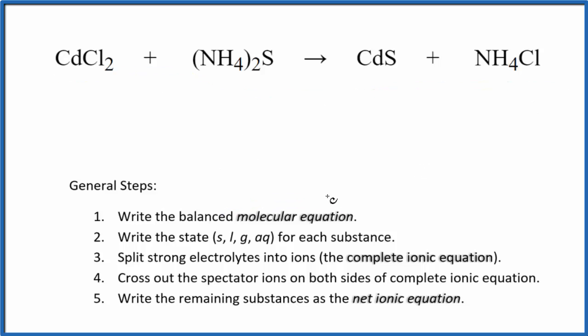So to do that, I can see I have two chlorine atoms here, just one here. Let's put a two in front of the ammonium chloride. Now I have two chlorides, two ammonium ions, but I have two ammonium ions here. And it looks like everything else is balanced. So this is the balanced molecular equation.